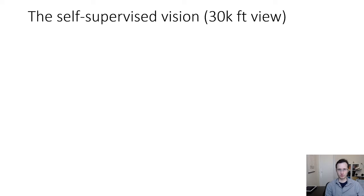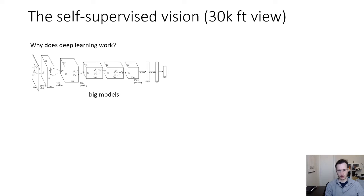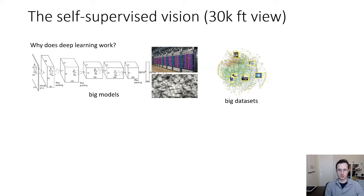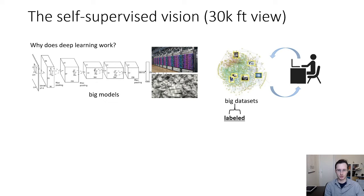Let's start with a very big picture view of self-supervised learning. In order to make deep learning models work really well, we basically need two things. We need a very large model, and we basically know how to solve that — by building a giant data center and spending lots of cash. But second, we need a large dataset, and not just any dataset. For classic supervised deep learning, we need a large labeled dataset, and collecting such datasets is typically a very labor-intensive process, both curating the data itself and labeling it.